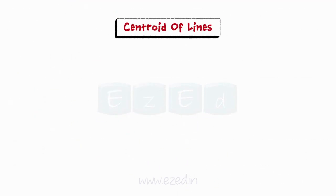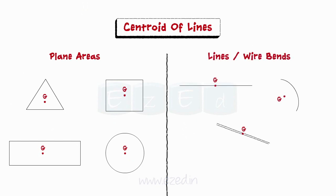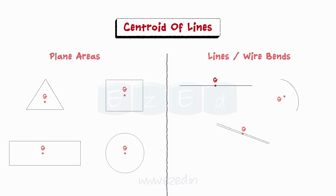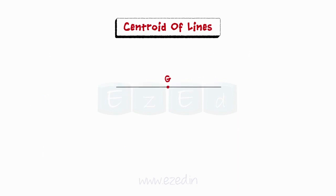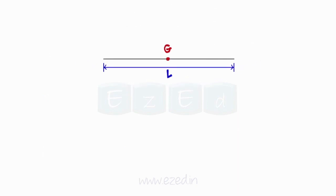Previously, we have learned to find the centroid of plane areas. Now, we will learn to locate the centroid of lines and wire bends, which are also geometrical figures. Lines can be defined as one-dimensional figures whose length L is more prominent than its thickness B. Also, thickness is uniform throughout the length.